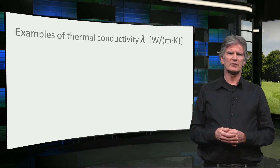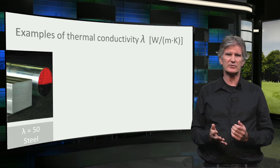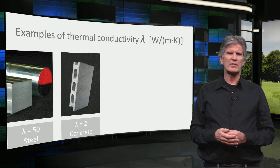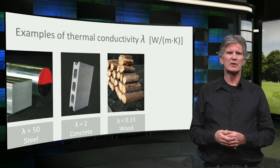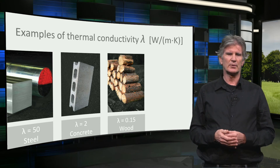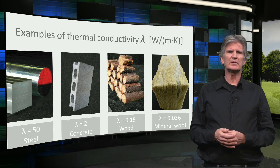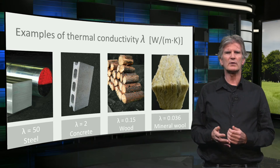There are generally speaking four groups of materials. Metals with a very high thermal conductivity higher than 50, like steel. Stony materials with a high thermal conductivity around 1.5 — concrete, for example, has a thermal conductivity of 2. Wood and plastics with a relatively low thermal conductivity — wood, for example, has a thermal conductivity of 0.15. And insulating materials like mineral wool, with a very low thermal conductivity less than 0.05. In the course reader and on the internet you can find the thermal conductivity for all kinds of building materials.